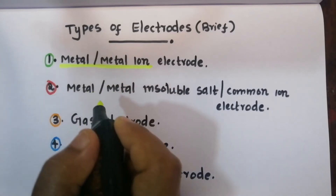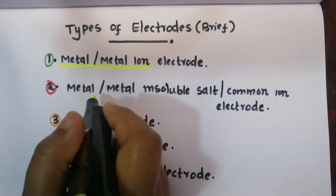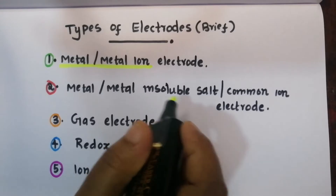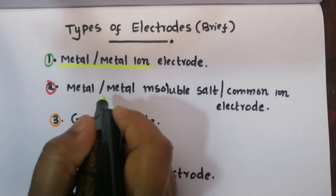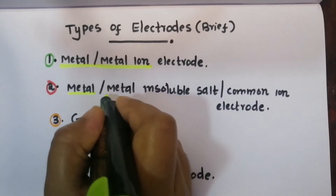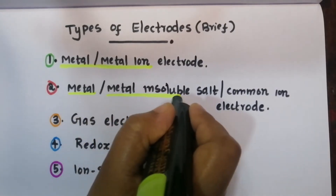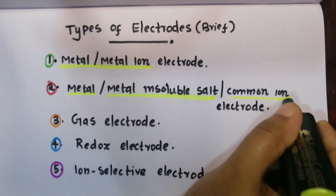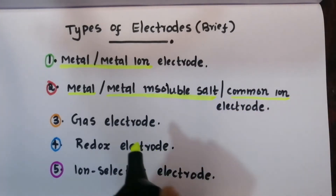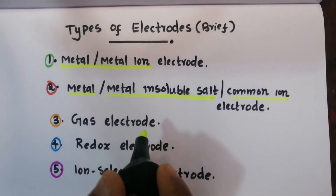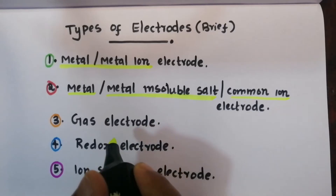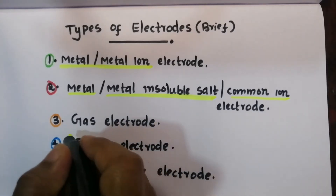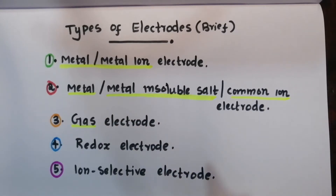The next type is the metal/insoluble salt/common ion electrode. There is a metal ion involved, and there are three components in this system. We will discuss this with an example.